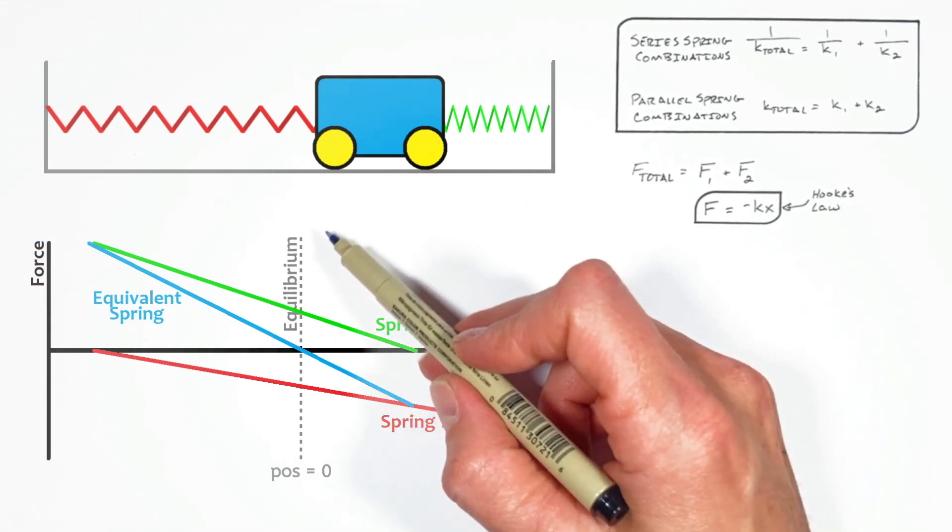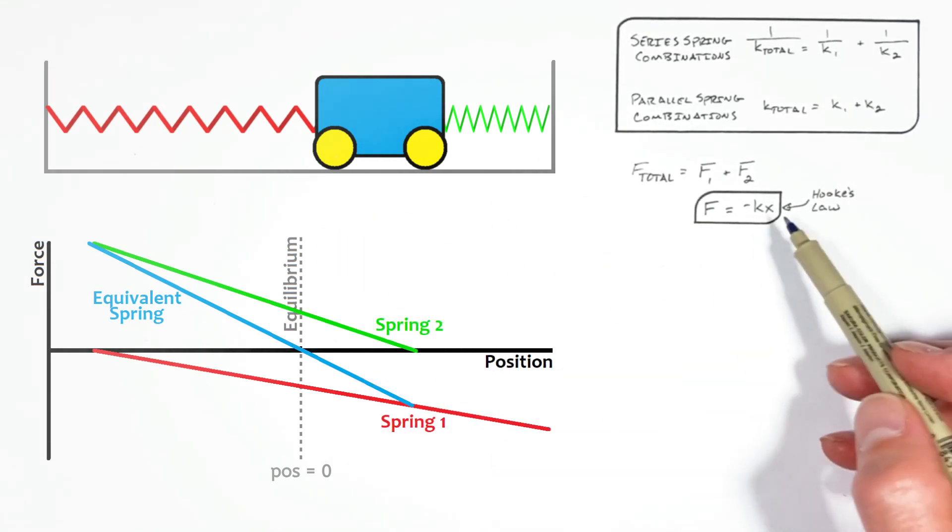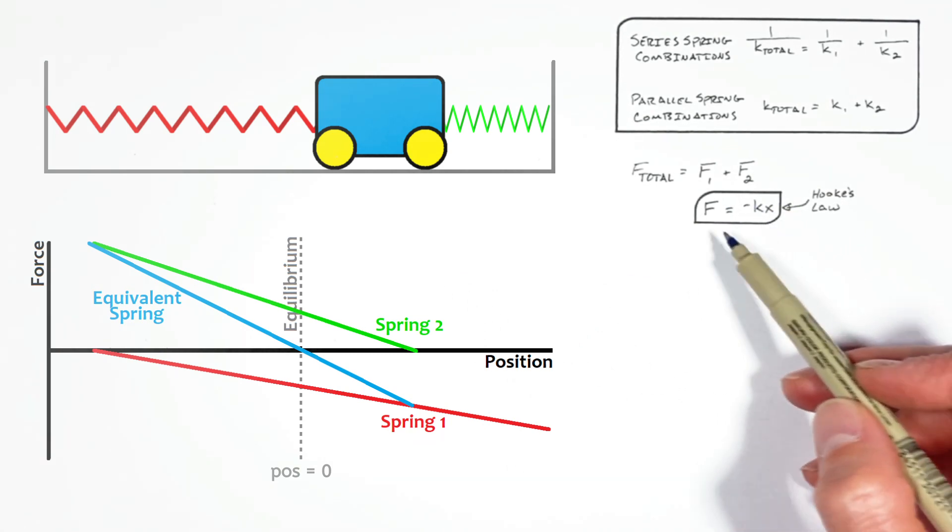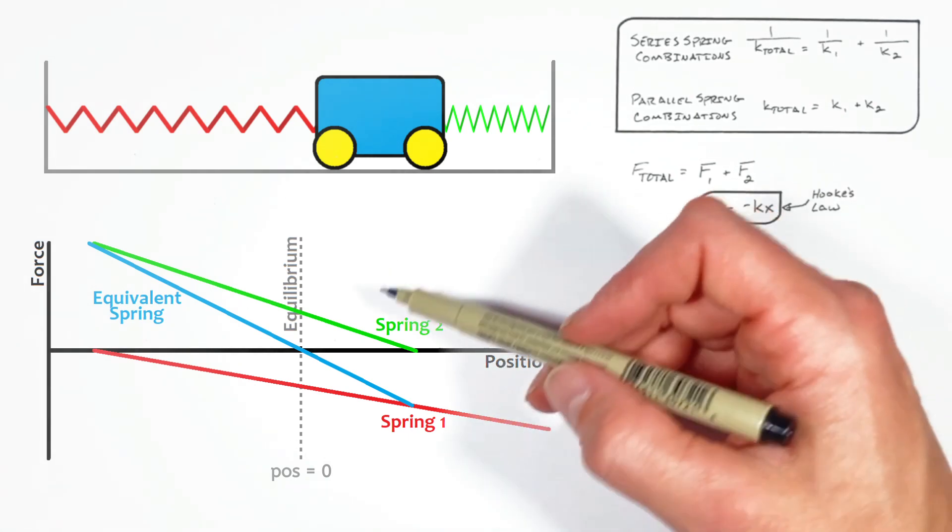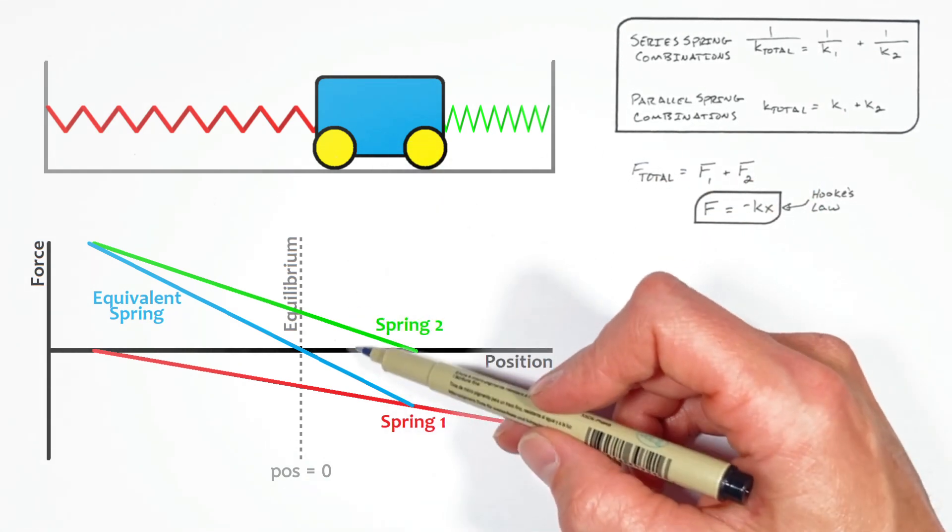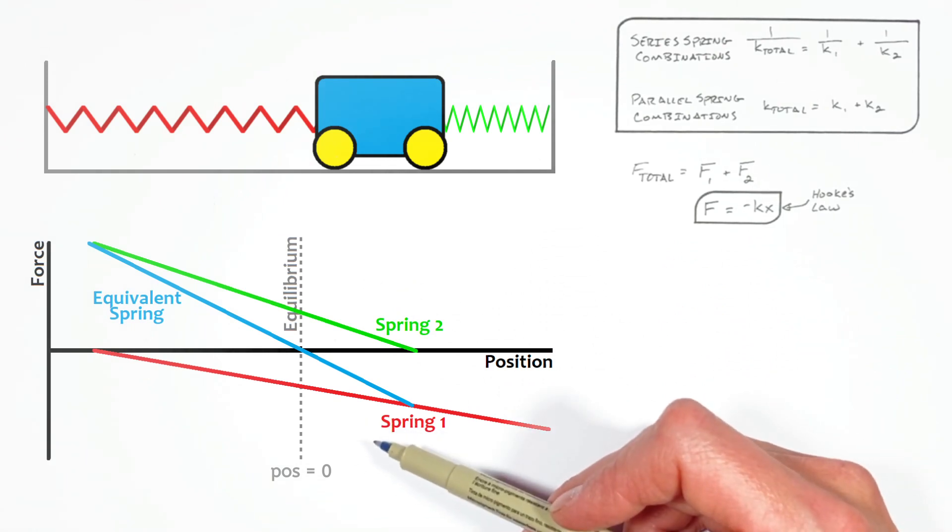You see, if we say equilibrium is a position of zero, then the force, according to Hooke's Law, when the objects are at a position of zero, should in fact be zero. But we know each of these springs is producing some force, either to the right or to the left.